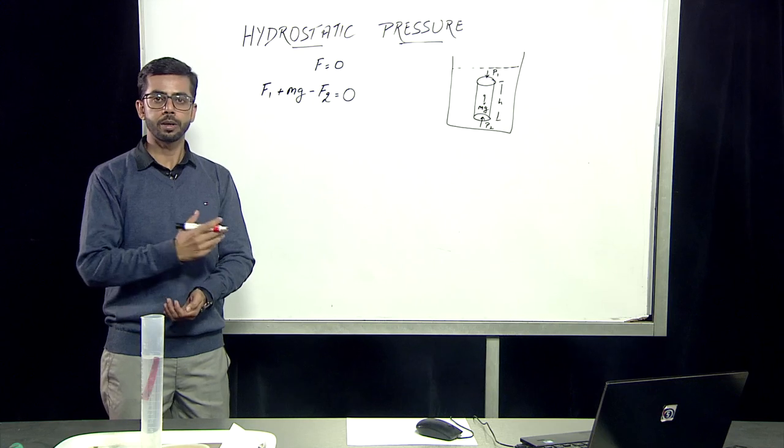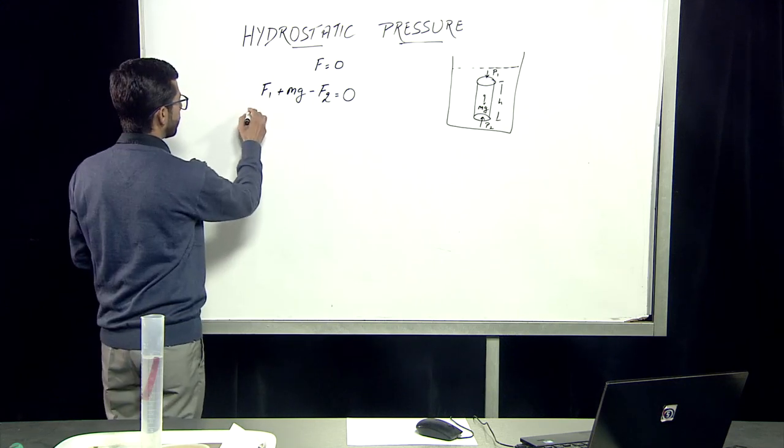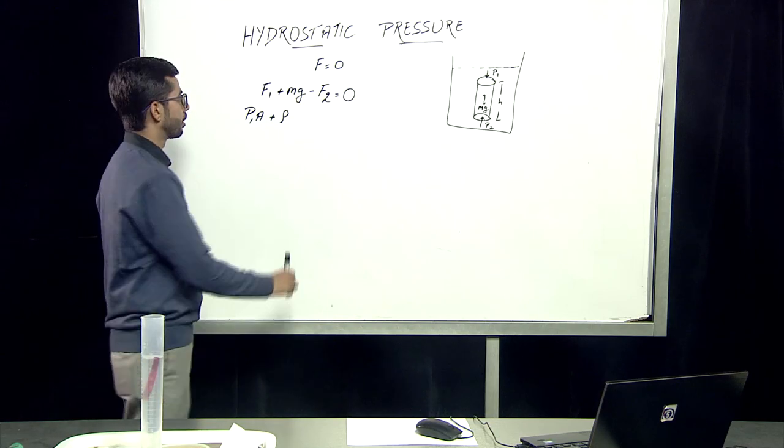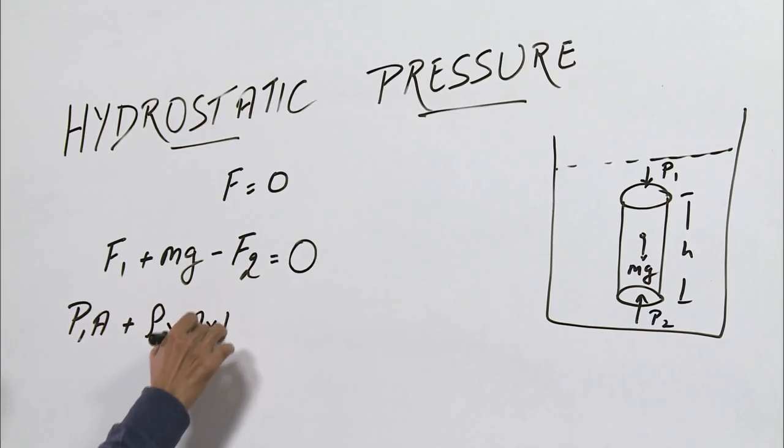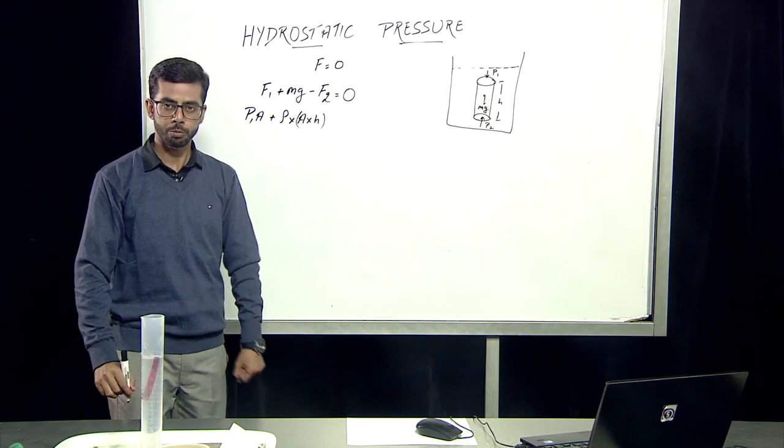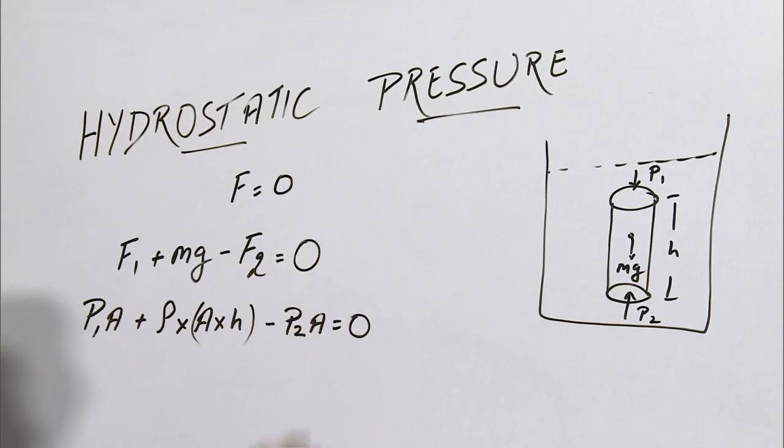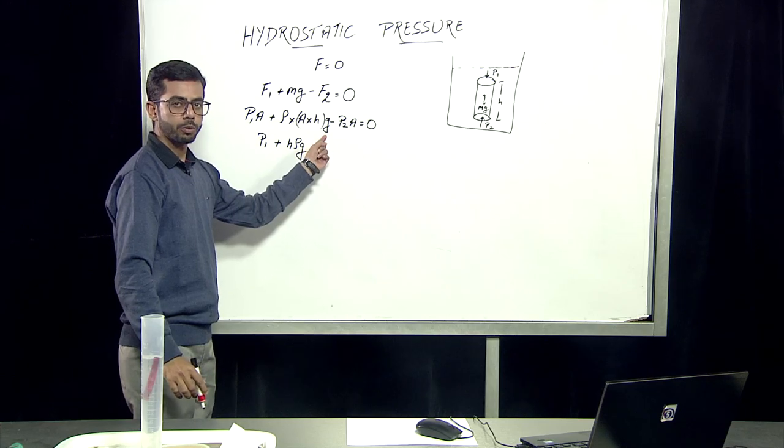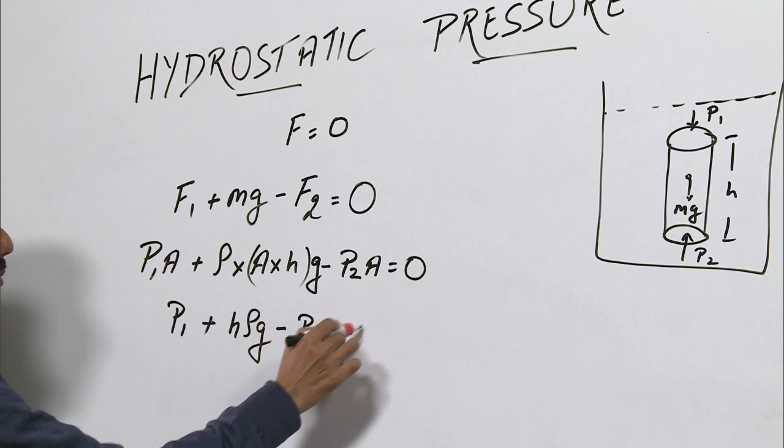Now, in terms of pressure, we need to elaborate this equation and force is given by the product of pressure into area. Mass is nothing but given by the product of density of an object into the volume, where the volume can also be elaborated in the form of the product of area into height of the cylindrical object. And minus F2. As you can see from this equation, area is a common term which will cancel out. This term G is due to the availability of the weight. Therefore, we need to multiply G in this equation also.